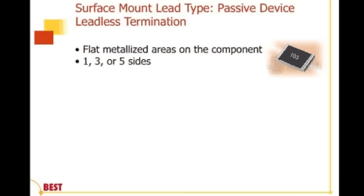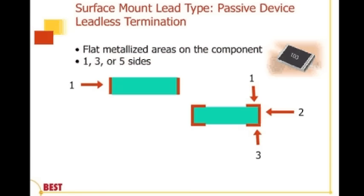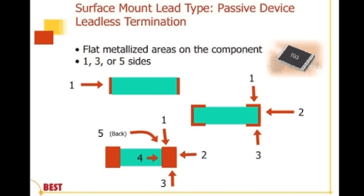On printed circuit boards we have lots of passive devices, typically resistors and capacitors. These have leadless terminations — there are no leads, no J-lead, no gullwing. Rather, they sit on pads and there could be one-, three-, or five-sided metalizations. For a one-sided passive device, the end face gets metalization — that's the metal where the intermetallic contact with the solder is made. A three-sided component has metalizations on the sides, and a five-sided component has both top and bottom faces with metalizations.